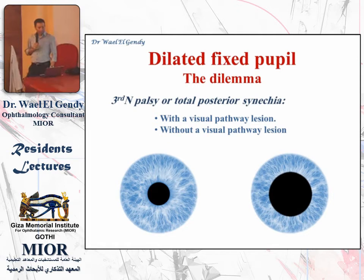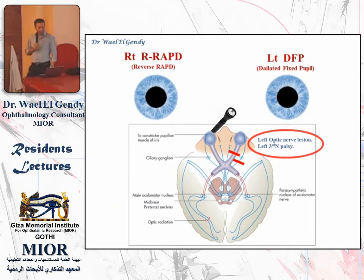What would you do if you have a dilated fixed pupil? A dilated fixed pupil means either you have an efferent defect, like in third nerve palsy, or total posterior synechiae, or a traumatic lesion. If you want to discriminate whether this is an isolated lesion or if it is associated with a visual pathway lesion, you are going to have to do your swinging flash test and rely on other signs, other than the direct relative afferent pupillary defect.